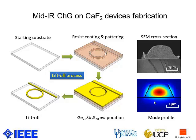The fabrication follows a typical liftoff process. Firstly, we spin-coated the CaF₂ substrate with negative photoresist. Then we used UV lithography to pattern it. After that, we used thermal evaporation to deposit the glass film on top of the substrate. Then we used acetone to remove the undesired parts, leaving the device pattern on the CaF₂ substrate. This is the SEM image of the chalcogenide waveguide device we fabricated.